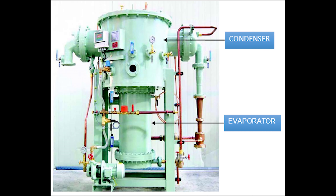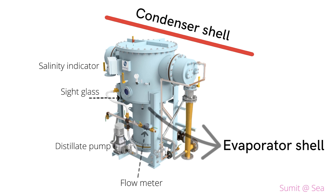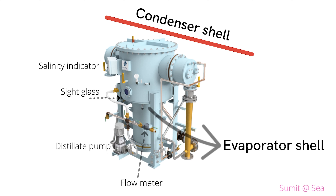Let's discuss the components of the fresh water generator. Number one is the evaporator shell — this is where seawater is evaporated with the help of waste heat rejected by the main engine jacket cooling water. Seawater evaporates at a lower temperature because of the vacuum inside the shell. Number two is the condenser shell, where evaporated vapors get condensed with the help of incoming cold seawater.